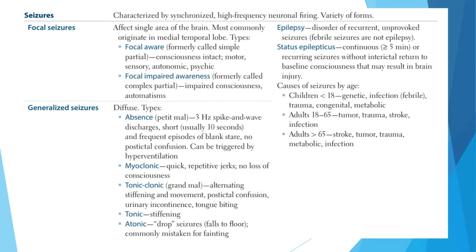Myoclonic seizures are quick, repetitive jerks with no loss of consciousness. Tonic-clonic seizures involve alternating stiffening and movement, post-ictal confusion, urinary incontinence, and tongue biting. Tonic seizures involve stiffening. Atonic seizures, or drop seizures, cause the patient to fall to the floor and are commonly mistaken for fainting.